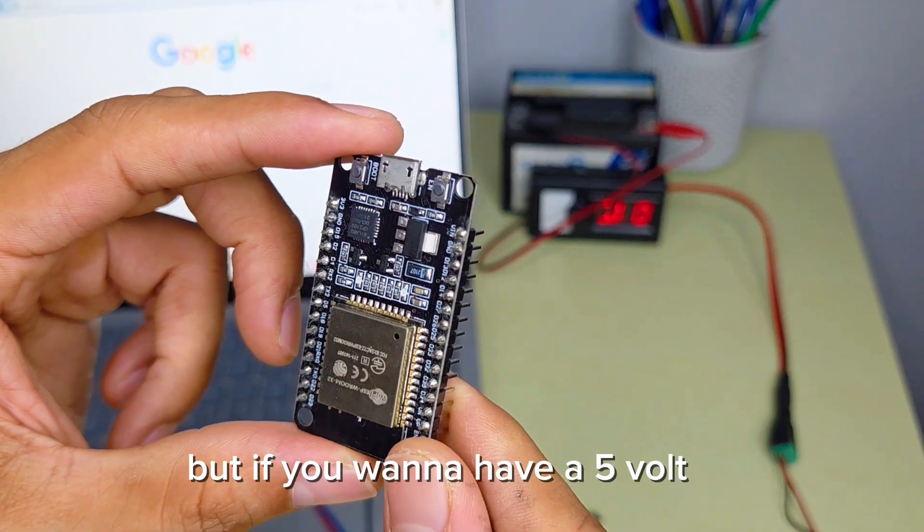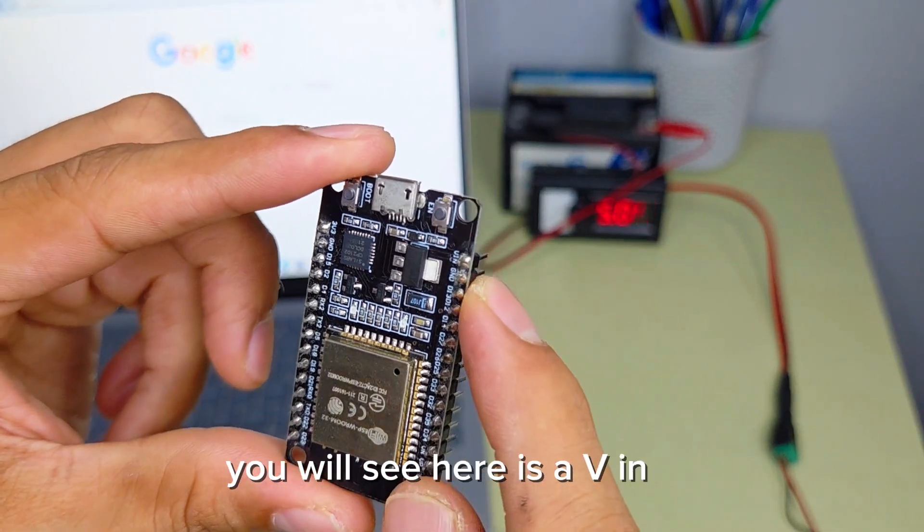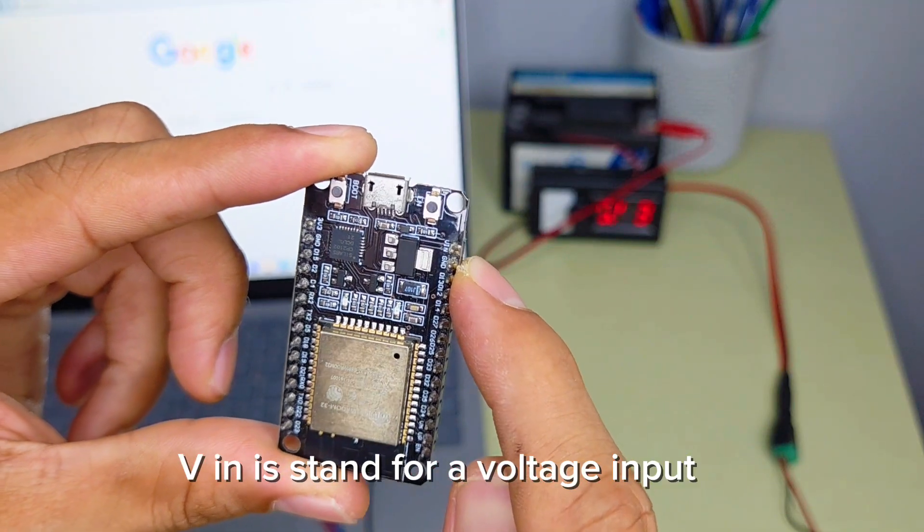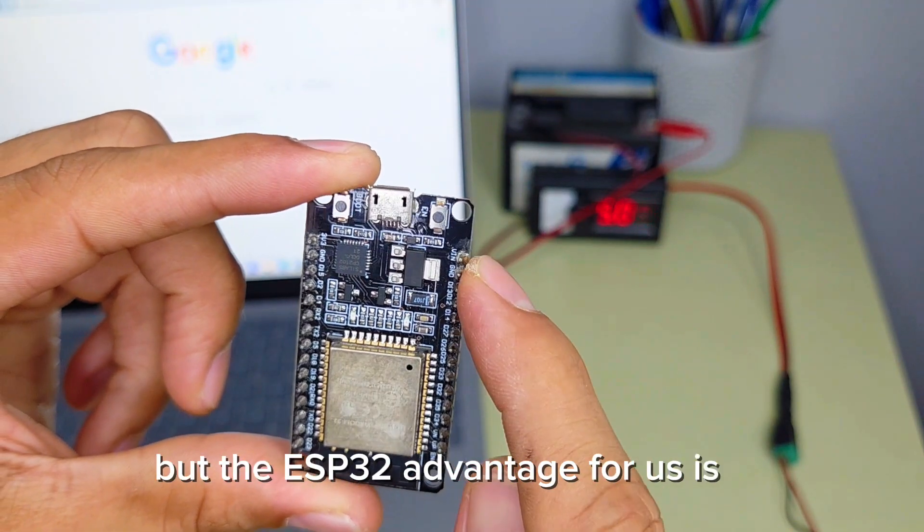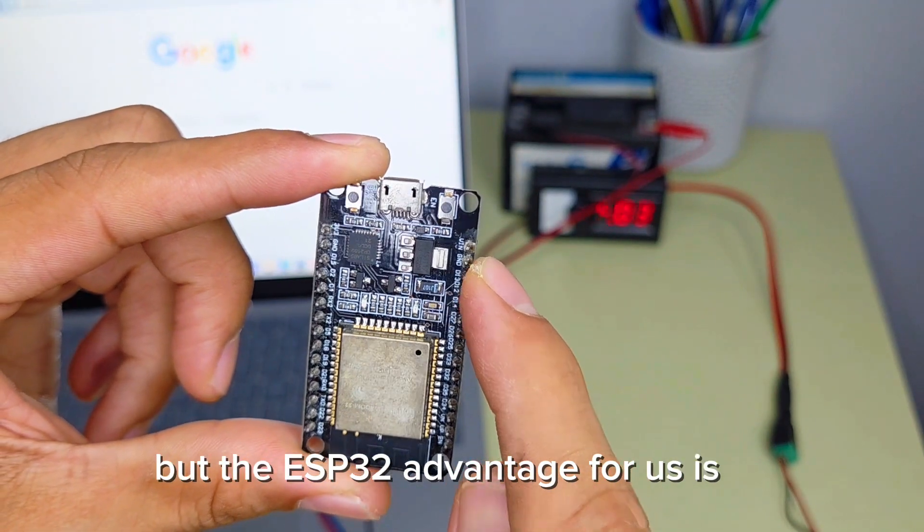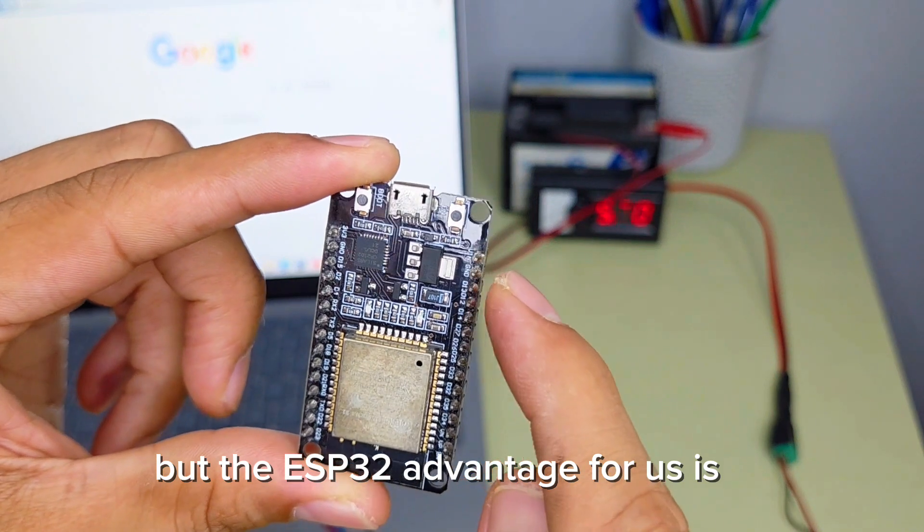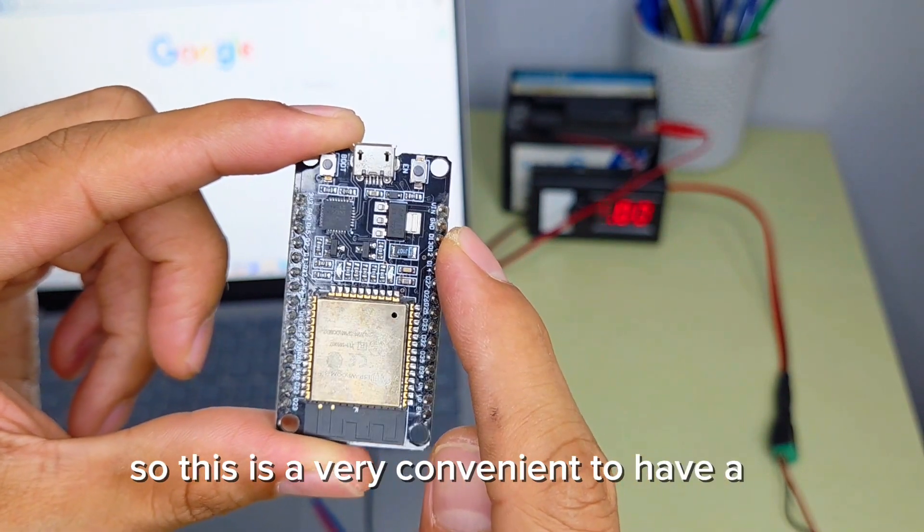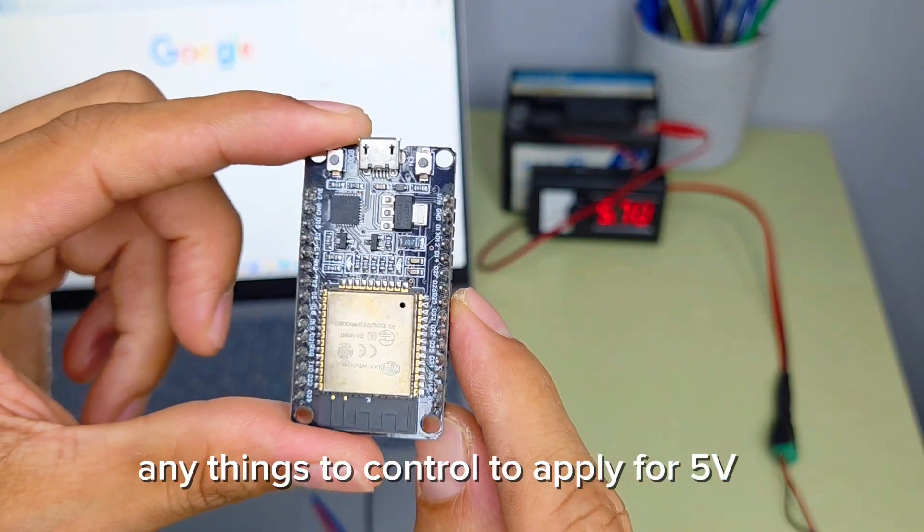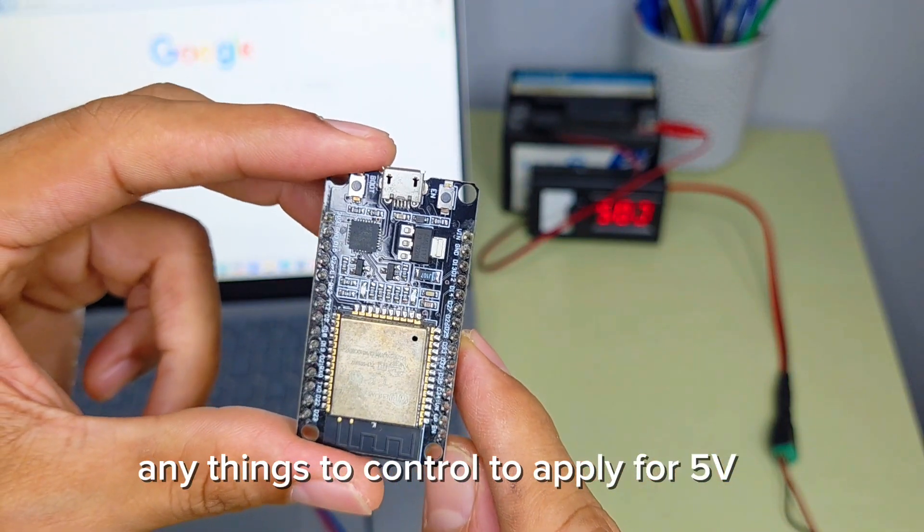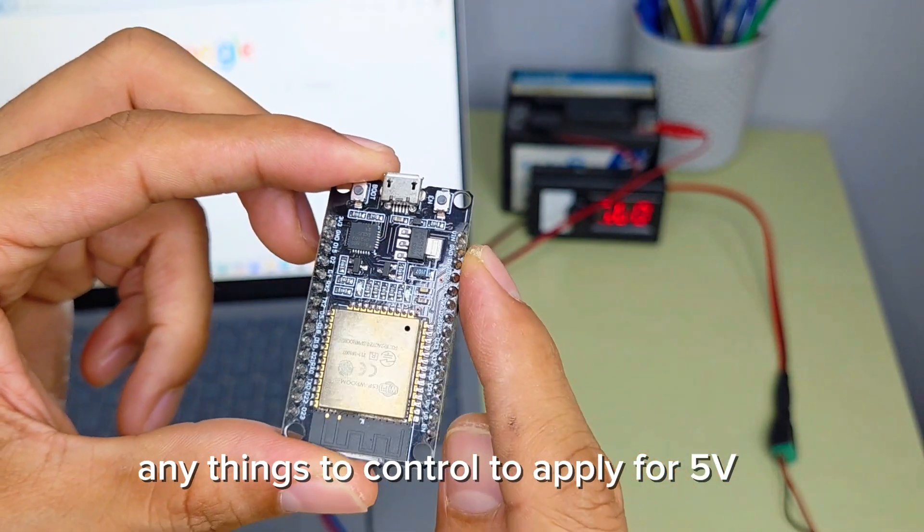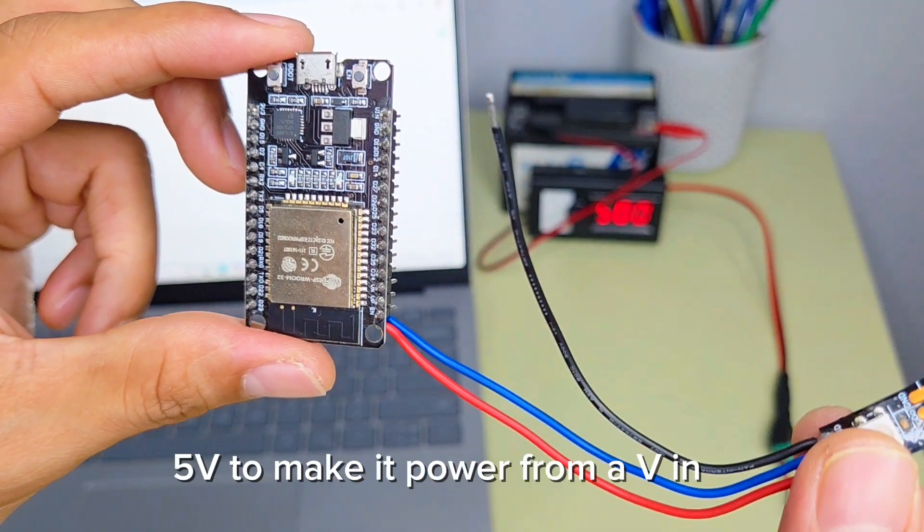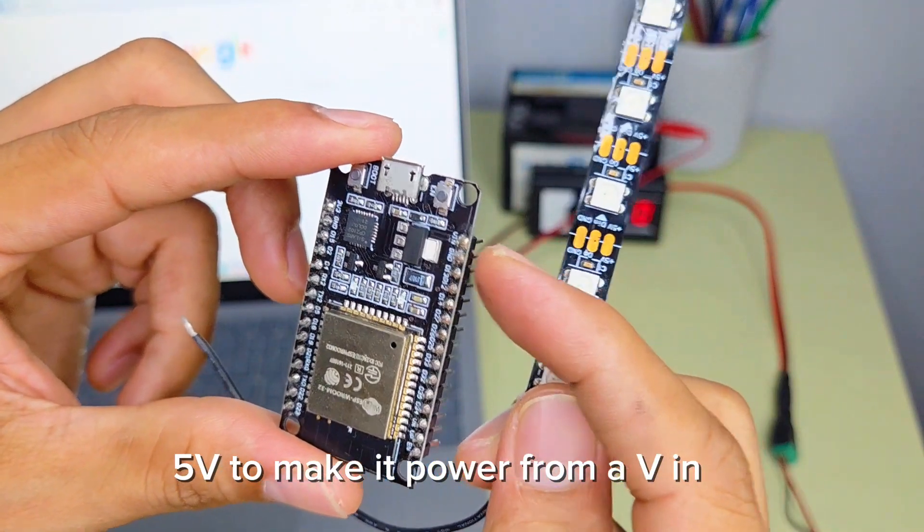If you want to have 5 volt, you will see here is VIN. VIN stands for voltage input, but the ESP32 advantage is we can use this as 5 volt output. This is very convenient to apply the 5 volt. We're going to use this LED strip 5 volt powered from VIN.